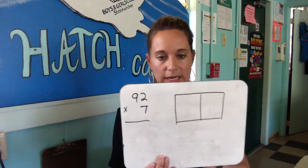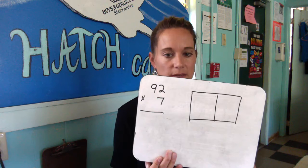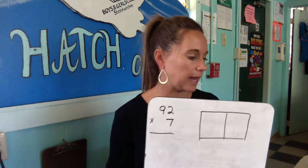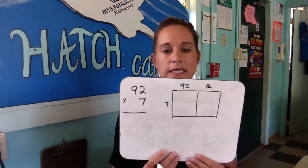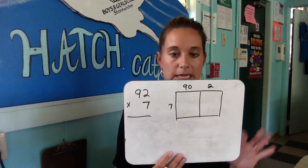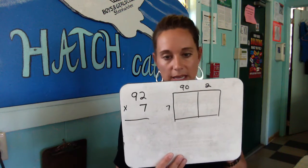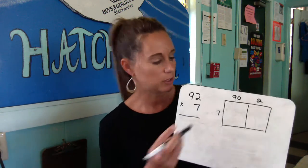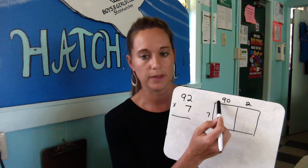The very first example I'm going to show you is a two-digit times a one-digit: ninety-two times seven. We would multiply the seven times the two and the seven times the nine. What your child would most likely do is they're going to break apart the ninety-two into ninety and two, and of course you're going to keep that seven.